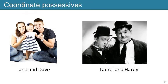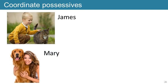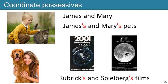Now let's turn to coordinate possessives. A coordinate possessive is two nouns or pronouns, most commonly joined by the word 'and' — for example, 'Jane and Dave' or 'Laurel and Hardy'. When considered as single units, they take a single apostrophe-plus-s: Jane and Dave are joint parents, Laurel and Hardy are film collaborators. But James and Mary are not a single unit, so when we put them together in a possessive we need apostrophes for both names: 'James's and Mary's pets'. The same applies to different directors: 'Kubrick's and Spielberg's films'.